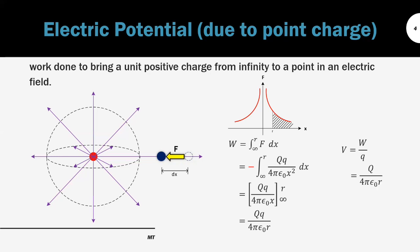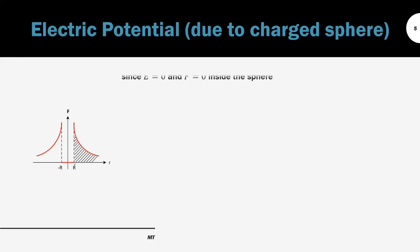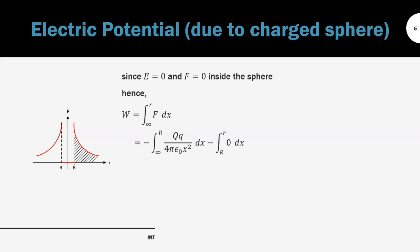Next, we move on to the charged sphere, which we covered in the last video. The electric field around the charged sphere has a similar trend as a point charge, except E is zero inside the sphere. Since E is zero inside, there is no electrostatic force inside. When moving a point charge from infinity to a point inside the sphere, we split the integration into two parts: from infinity to the surface, where force opposes the electrostatic force, and from the surface inward, where F is zero.